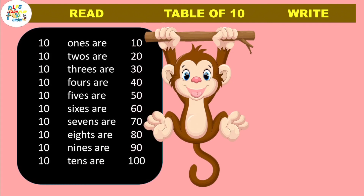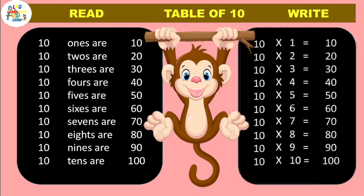Once more. 10 one's are 10, 10 two's are 20, 10 three's are 30, 10 four's are 40, 10 five's are 50, 10 six's are 60, 10 seven's are 70, 10 eight's are 80, 10 nine's are 90, 10 ten's are 100.